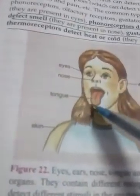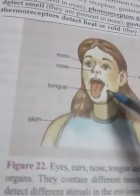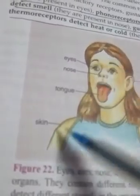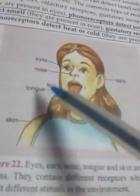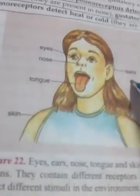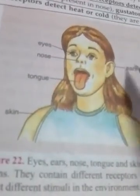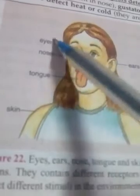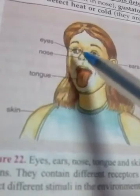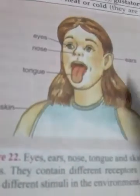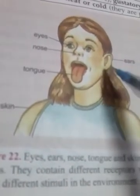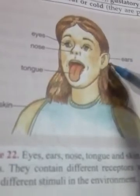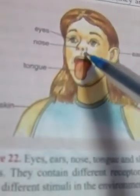Before explaining how animals respond, I'm going to explain two important factors: receptor cells and effector cells. Receptor cells are those cells present in the sense organs — eyes, nose, tongue, skin, and ear are the five sense organs. Eyes detect light, so they have a receptor cell called a photoreceptor cell. Ears detect sound, so they have a phonoreceptor cell. The nose detects smell, so it has an olfactory receptor cell.